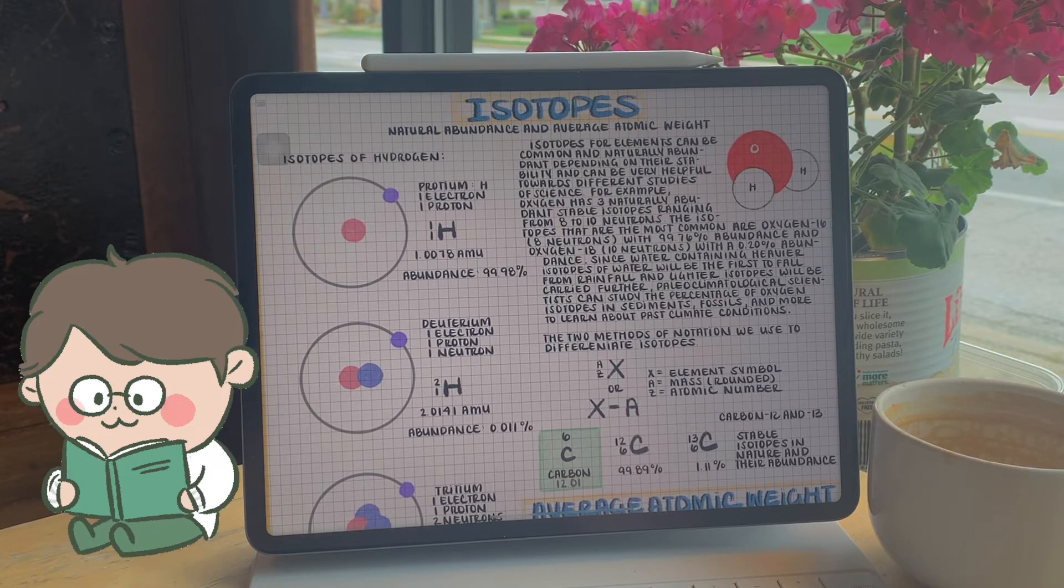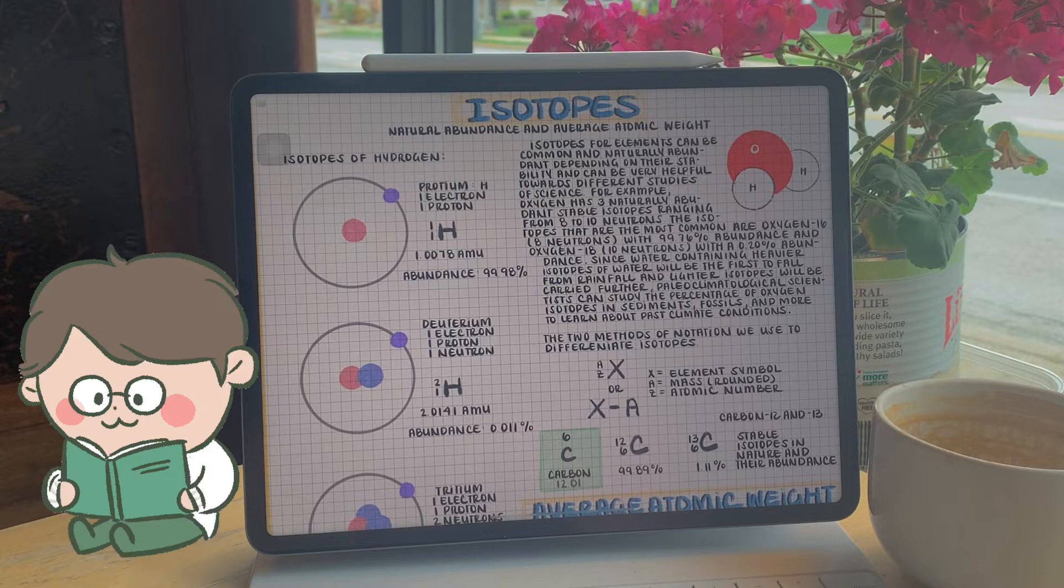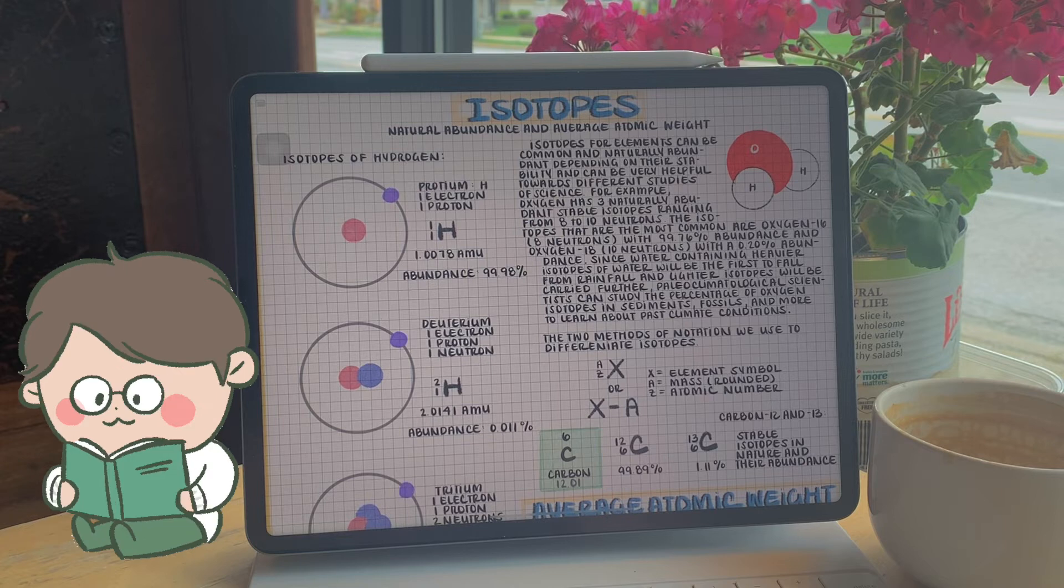The isotopes that are the most common are oxygen-16, 8 neutrons, with a 99.76% abundance, and oxygen-18, 10 neutrons, with a 0.20% abundance in nature.